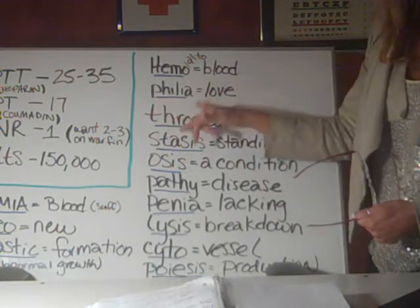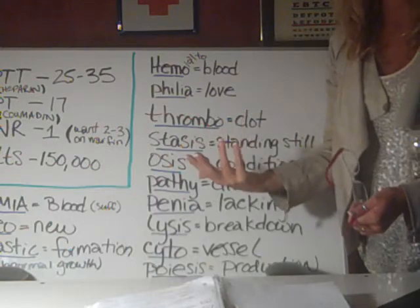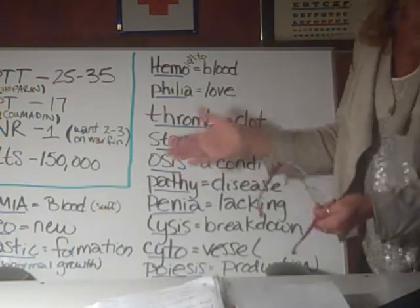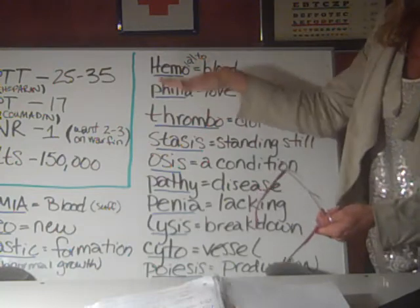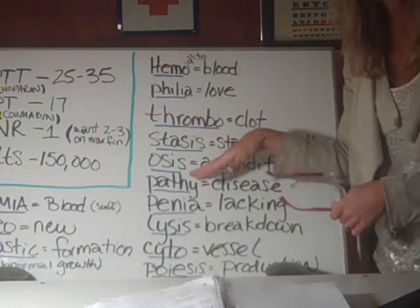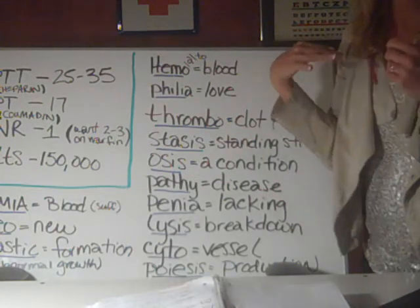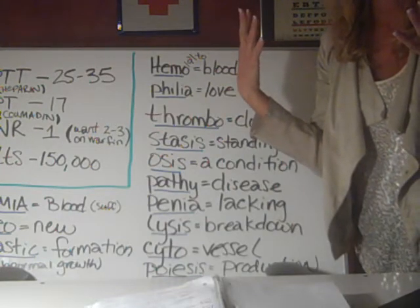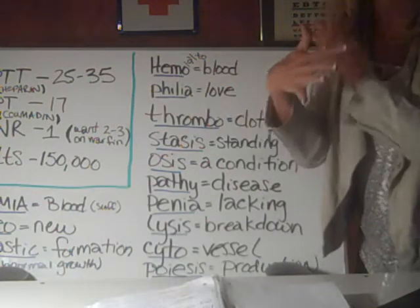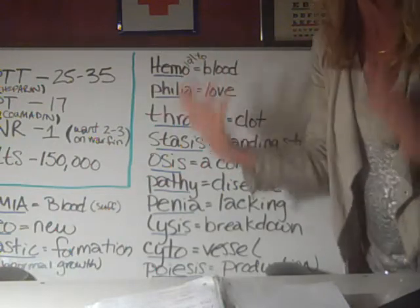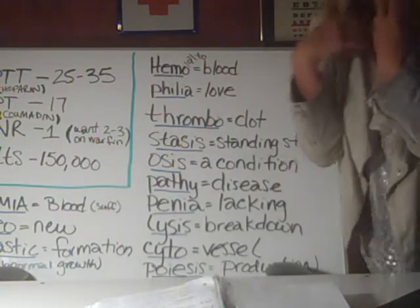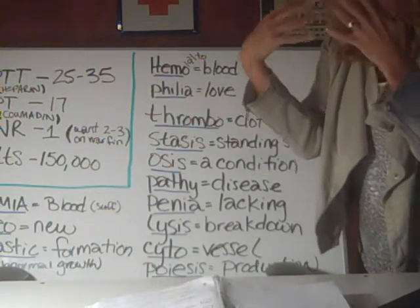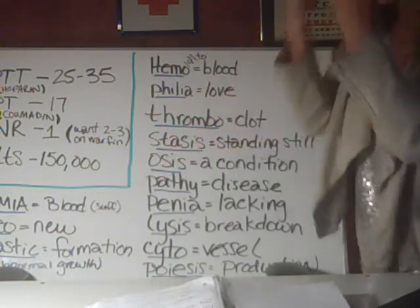Philia — P-H-I-L-I-A — the Greek word for that means love. So if you have hemophilia, that basically just means you love blood and there's way too much of it. It's a bleeding disorder.